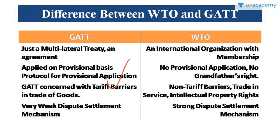The most important difference between GATT and WTO is that GATT had a very weak dispute settlement mechanism, while WTO has a very strong dispute settlement mechanism. This is all about the history of WTO. We are going to end the lesson here and meet in the next lesson where we will see the structure of WTO.